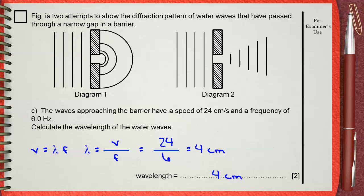This means that the wavelength is 4 centimeters. Notice that it is centimeters, not meters, because the speed used, 24, is in centimeters per second, not meters per second. So the wavelength will be 4 centimeters.